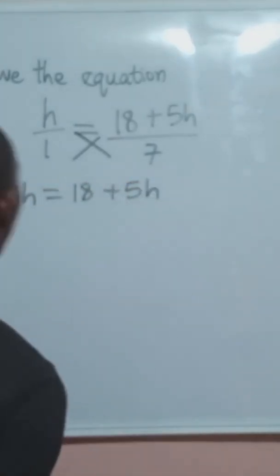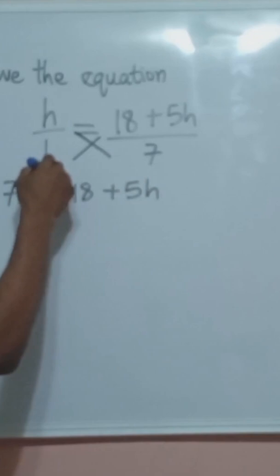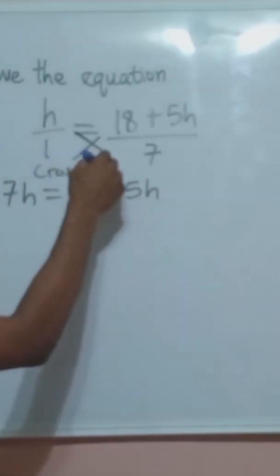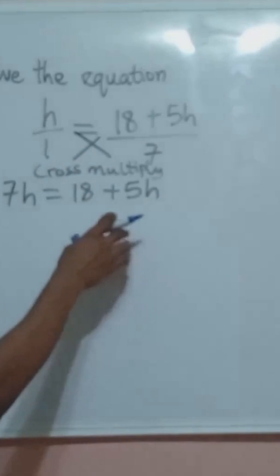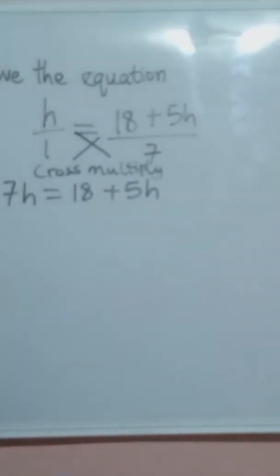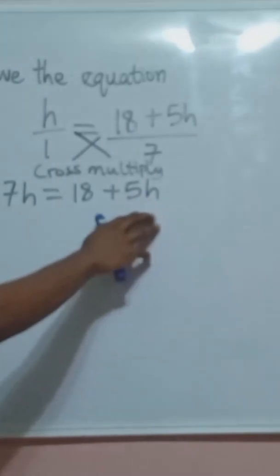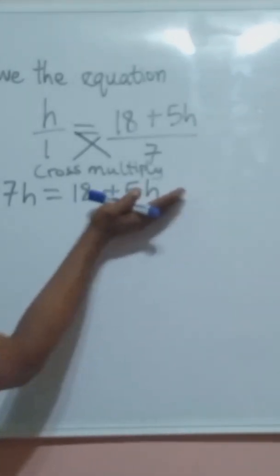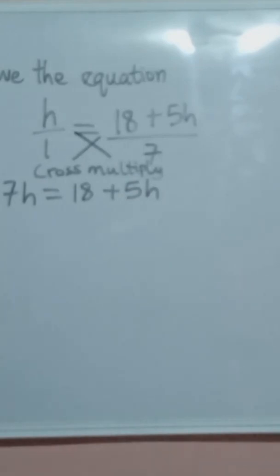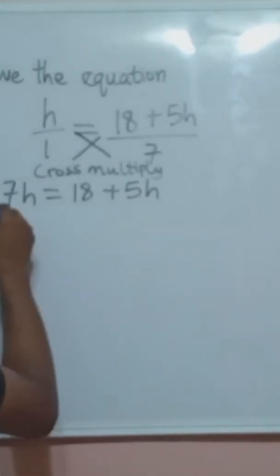The next thing we are going to do is to collect like terms. From here we can see we have 7h on one side and 5h on the other side. So we are going to move this 5h from here over to this side by saying subtract 5h from both sides.